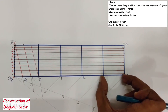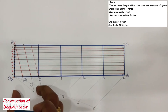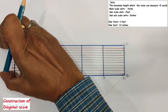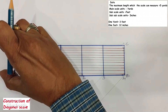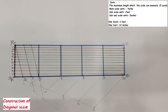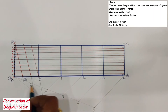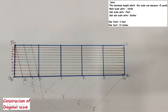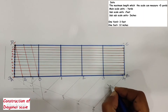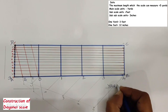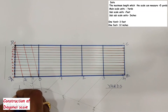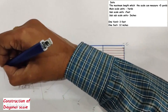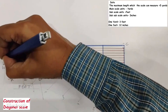The main scale units are in terms of yards, subscale units are in terms of feet, and sub-subscale units are in terms of inches. The representative fraction value is 2 is to 45. We need to write the main scale units, subscale units, and sub-subscale units in capital letters on the scale.